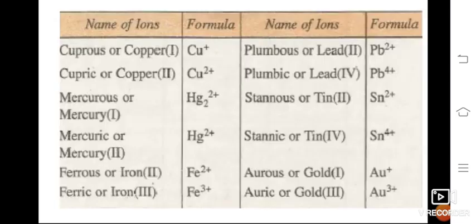Here we have a tabular column of metal elements showing variable valence. Copper: Cu+ has valence 1 (cuprous), Cu2+ has valence 2 (cupric). Mercurous: valence 1; mercuric: valence 2, but the molecular formula is different. Ferrous: valence 2 and 3. Plumbous: valence 2 and 4. Stannous: valence 2 and 4. Gold also has valence 1 and 3.